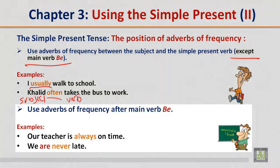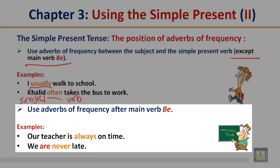Use adverbs of frequency after the main verb 'be'. For example: Our teacher is always on time. 'Always' is the adverb of frequency. 'Is' is the main verb be in this sentence. The rule is: use adverbs of frequency after main verb 'be'.